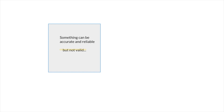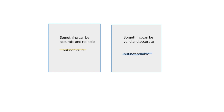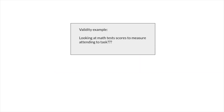Something can be accurate and reliable but not valid. It's also important to note that something can be valid and accurate but not reliable. For example, if we want to measure attention and we say let's look at test scores — if they did well on their math test they must have good attention — that is not a valid measure of attention skills. We have to consider this when measuring a specific skill to be sure the data represents the best valid measure.